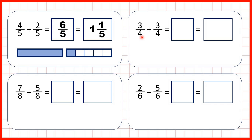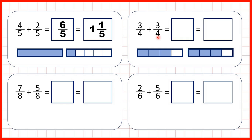Next we have three-quarters, so three parts out of four, and we're adding three-quarters. Now as an improper fraction, our answer is six-quarters, because each of these pieces is one-quarter and we have a total of six pieces.